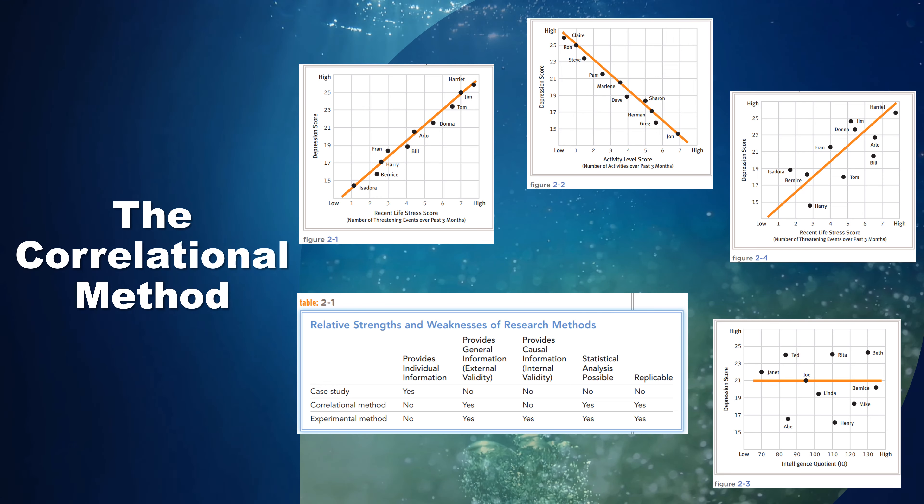Researchers have found, for example, a negative correlation between depression and activity level. The greater one's depression, the lower the number of one's activities. When the scores of a negative correlation are plotted, they produce a downward-sloping graph, like the one shown in Figure 2-2.